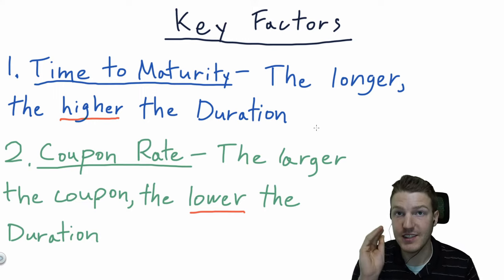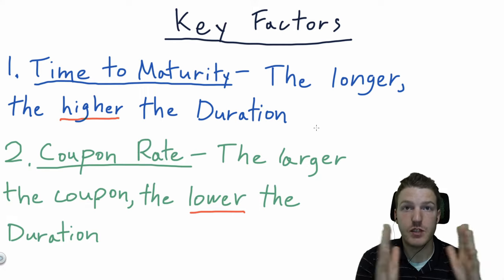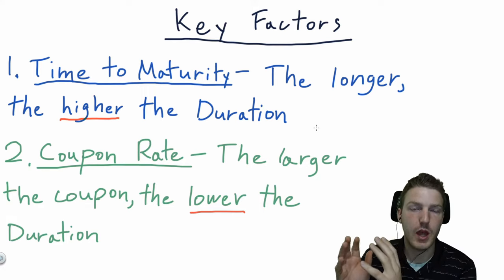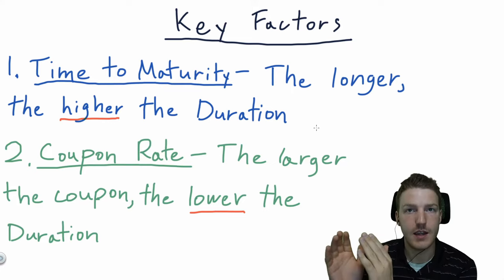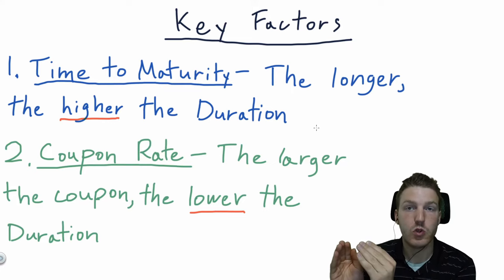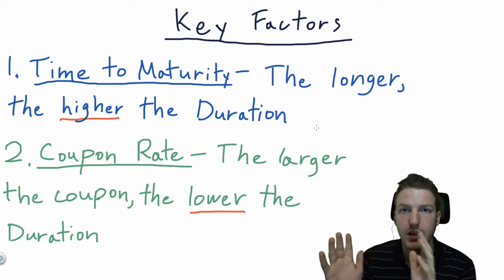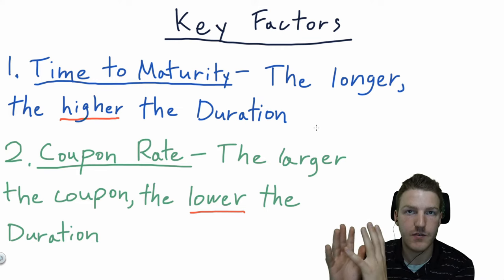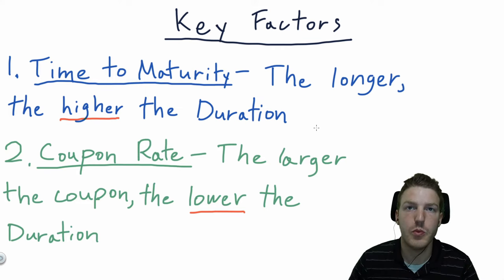Now think about a zero coupon bond. If you receive no coupons, all of the payment of that bond will happen at the very end at maturity, which means that the duration is equal to the time to maturity. So the highest duration you can have is when all of the cash flows are at the end of the investment, like a zero coupon bond.